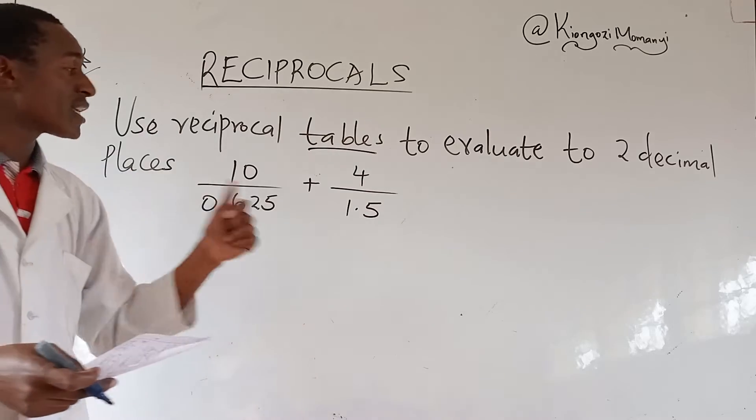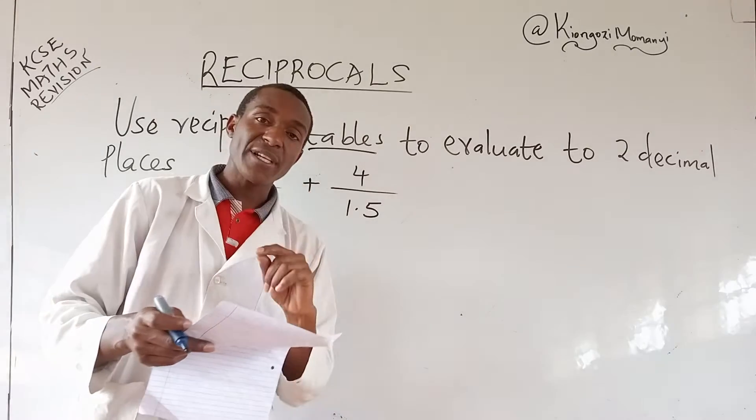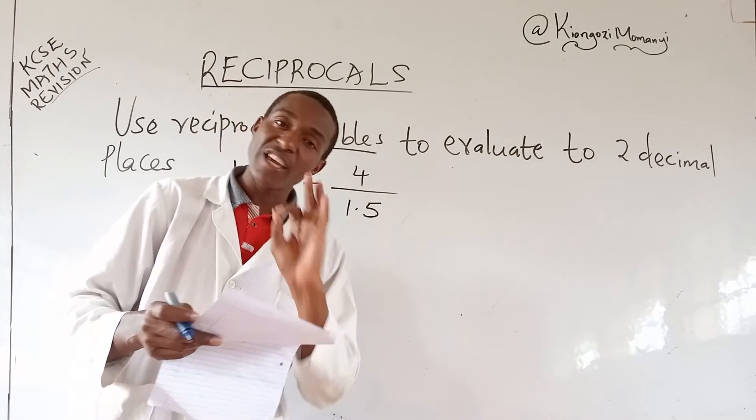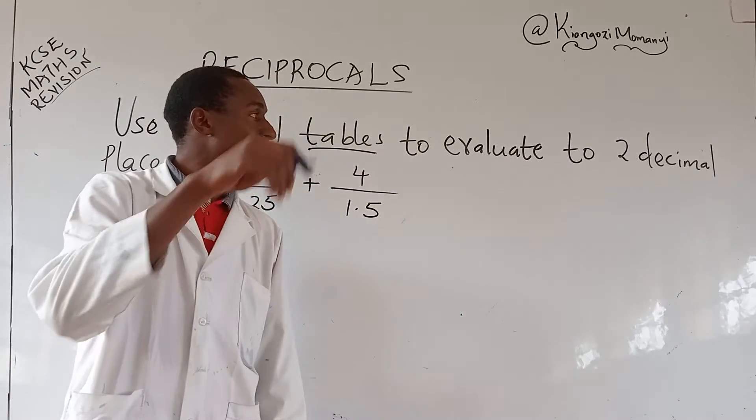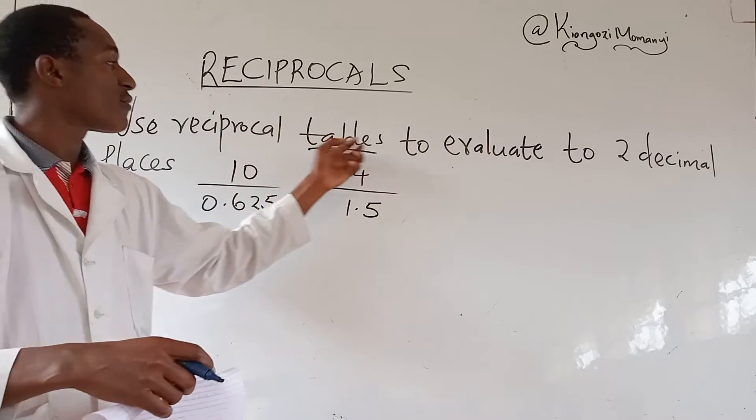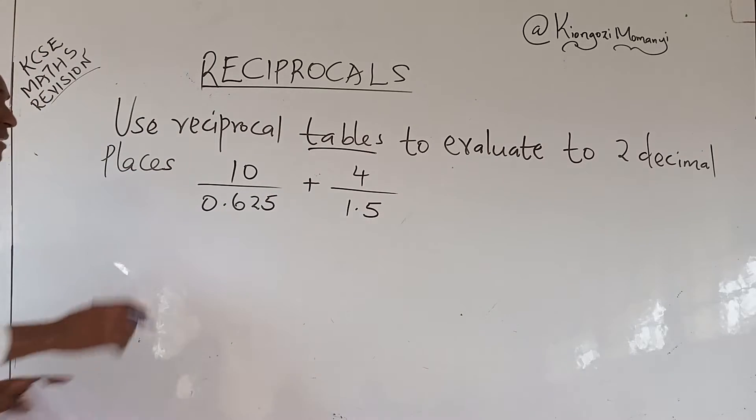There's a difference when you use a calculator compared to that one that has used a table. And that difference must be noted if someone is marking for you. The moment they realize that you have used a calculator, then that instruction has not been followed. You lose all the marks. Now in this case, solution,